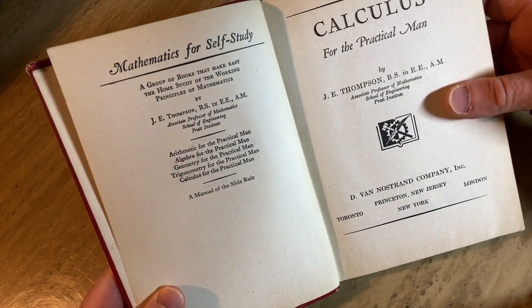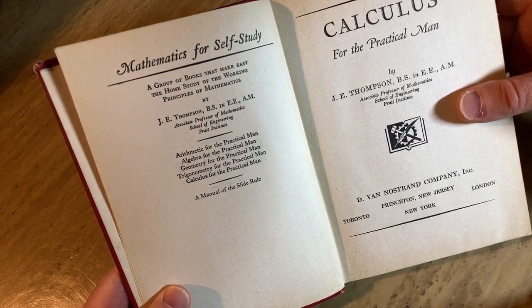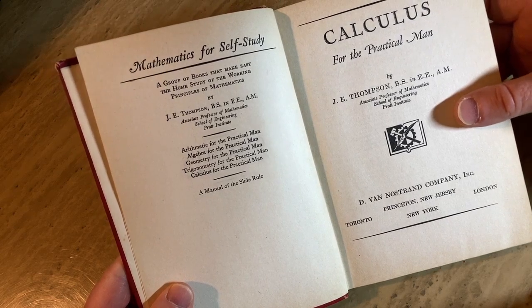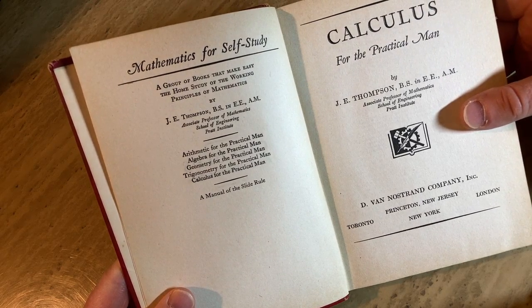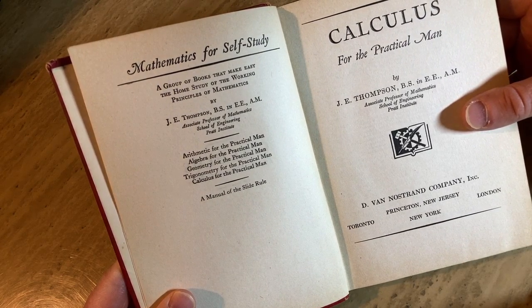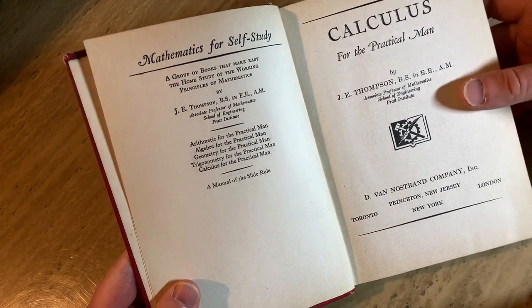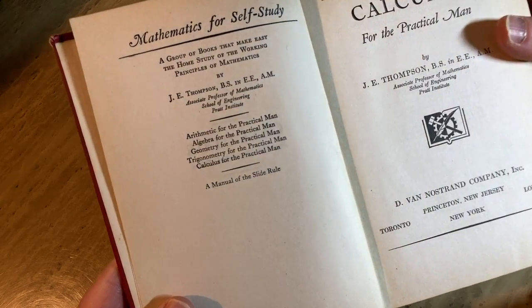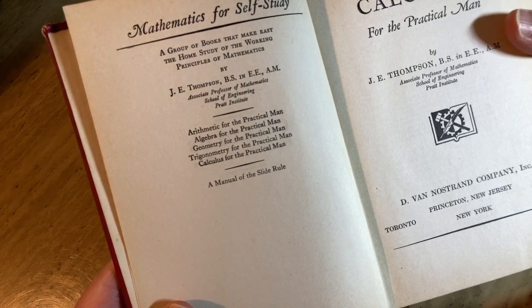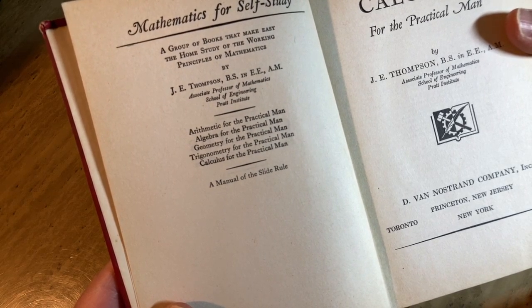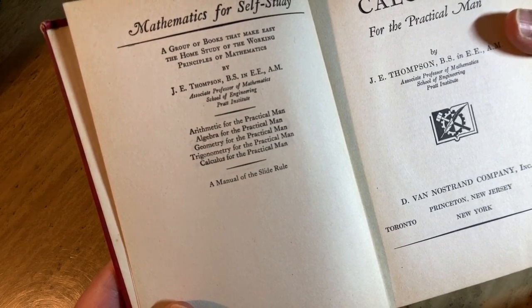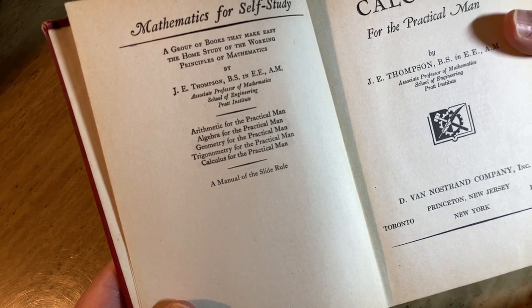A group of books that make easy the home study of the working principles of mathematics by J.E. Thompson, Associate Professor of Mathematics, School of Engineering, Pratt Institute. And look, there's other titles. Arithmetic for the Practical Man, Algebra for the Practical Man, Geometry for the Practical Man, Trigonometry for the Practical Man, Calculus for the Practical Man, Manual of the Slide Rule.